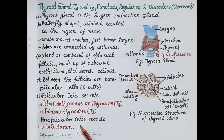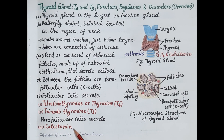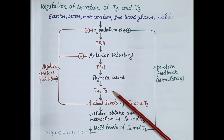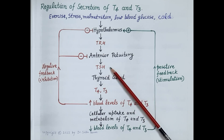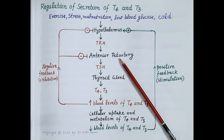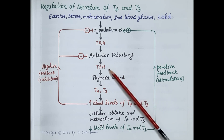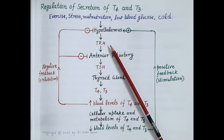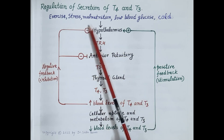Parafollicular cells secrete calcitonin, whose main function is to regulate blood calcium levels. Now let's understand regulation of secretion of thyroid hormone. The release of T3 and T4 into the blood is controlled by thyroid stimulating hormone (TSH) secreted by the anterior pituitary. Secretion of TSH in turn is regulated by thyrotropin releasing hormone (TRH) secreted by the hypothalamus.